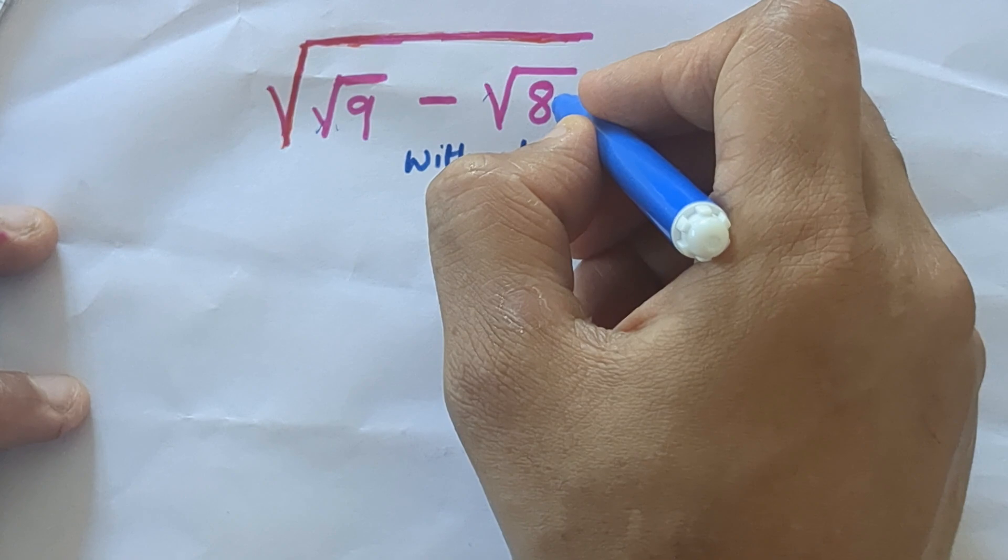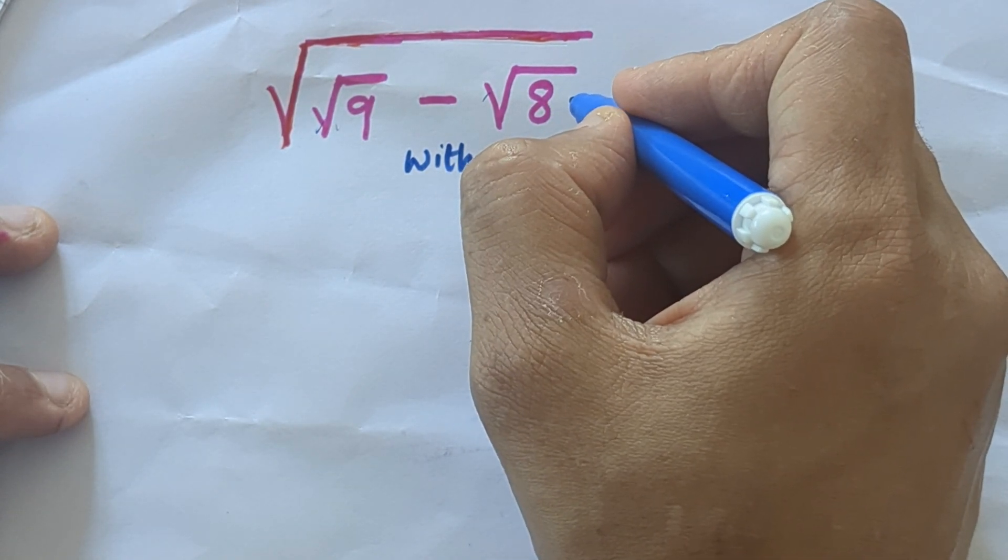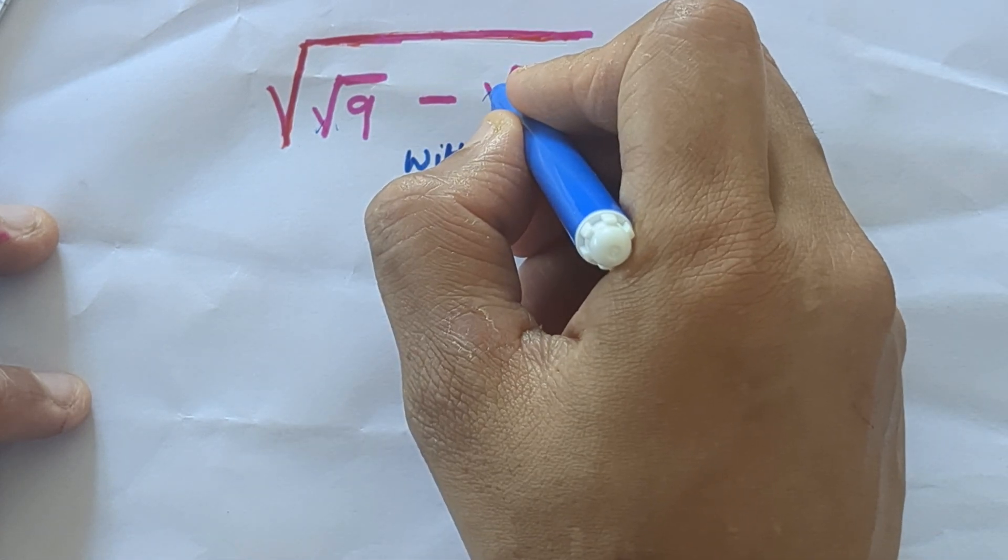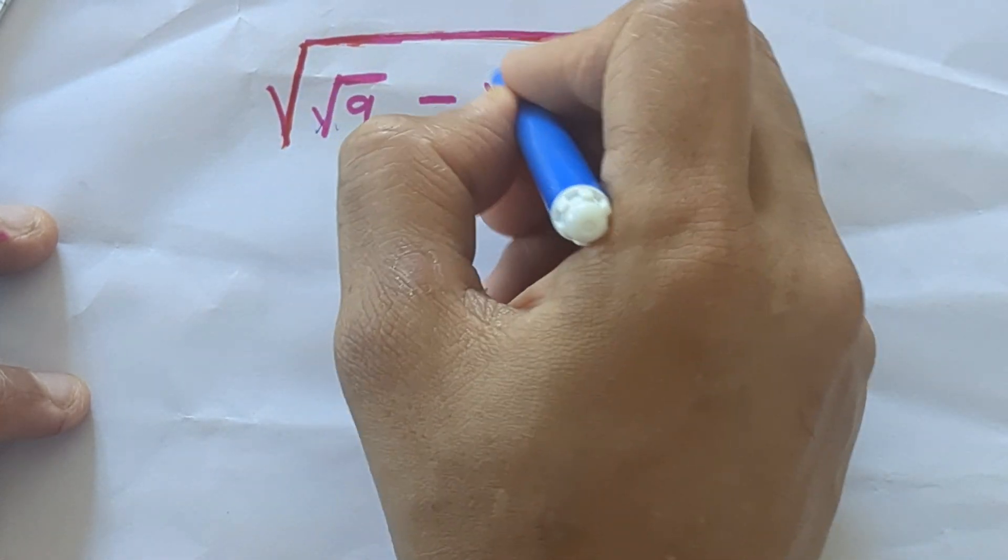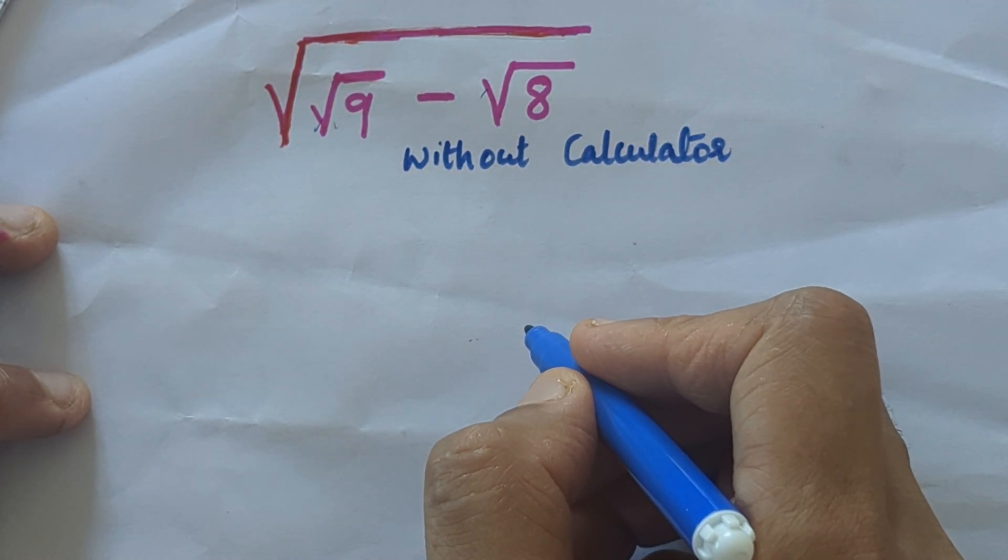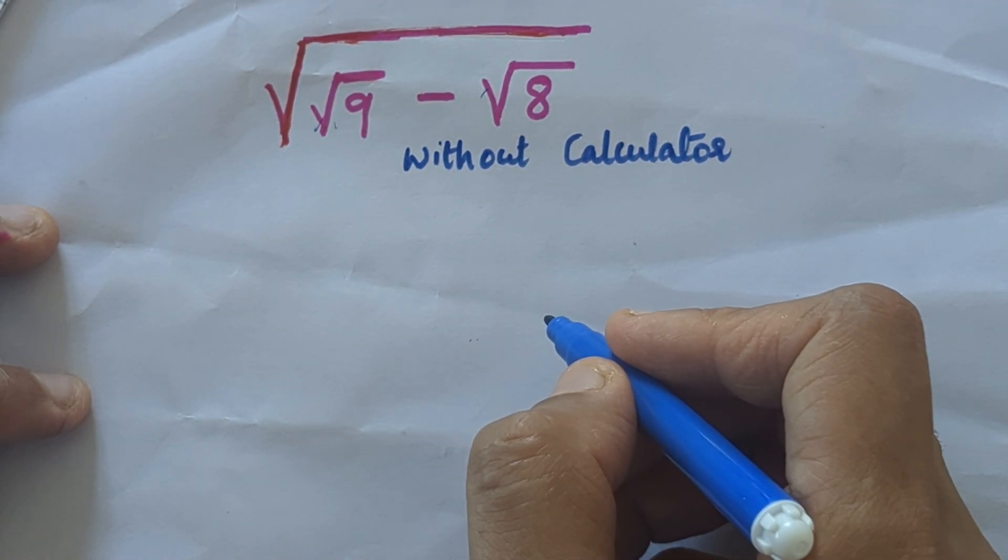If you find the value of root 8, then 3 minus root 8, and the whole answer we have to find the root, it's too difficult. So how can we do that without a calculator in an easy manner?